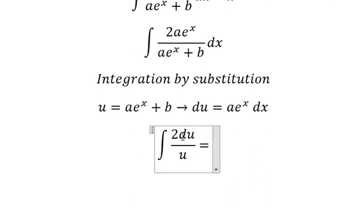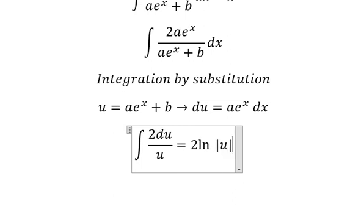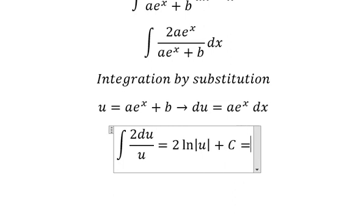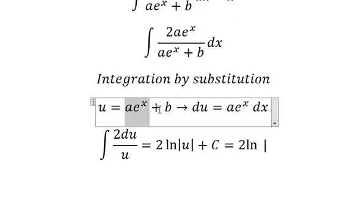The integral of du/u gives us 2ln of the absolute value of u plus c, where u equals ae^x + b.